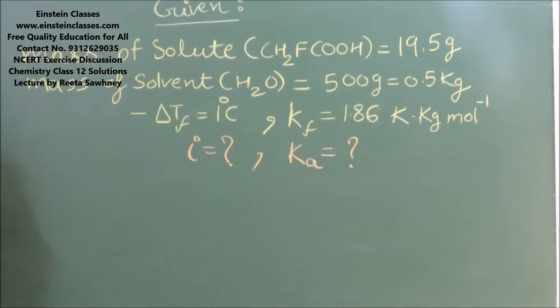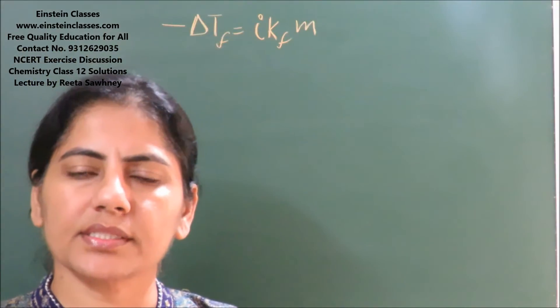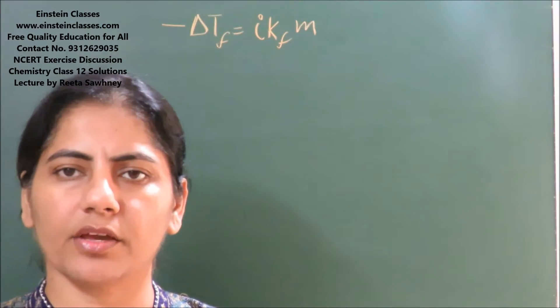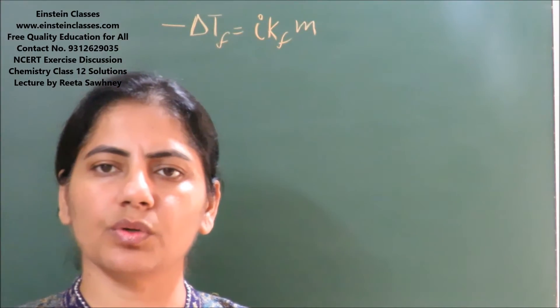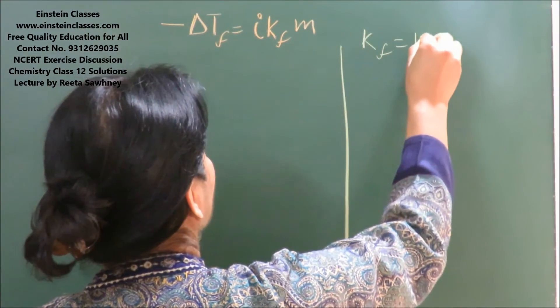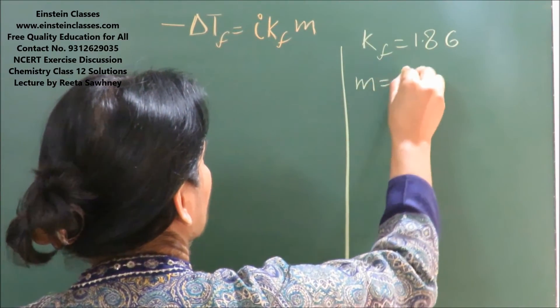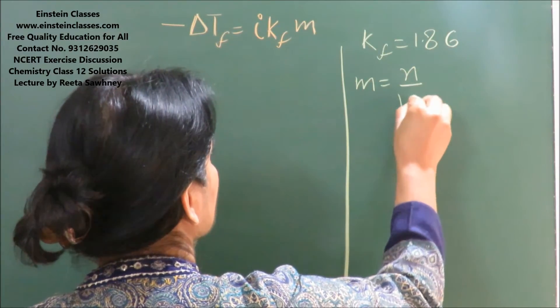So what is the concept which we are going to use? It is depression in freezing point: ΔTf = i × Kf × m. Kf is 1.86, it is already given to us. We need to find out the molality. Molality is mole of solute by the mass of solvent.